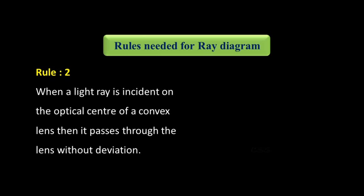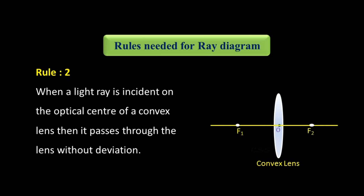Rule number two: when a light ray is incident on the optical center of the convex lens, then it passes through the lens without deviation. The incident ray passing through the optical center shows no change in its direction.